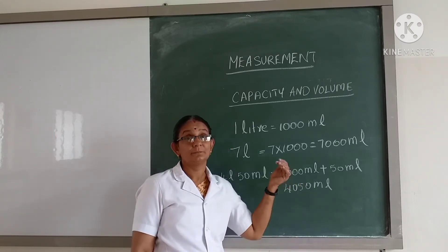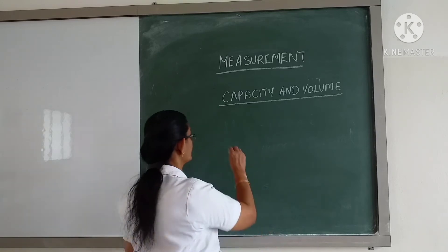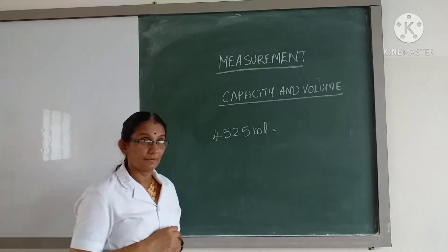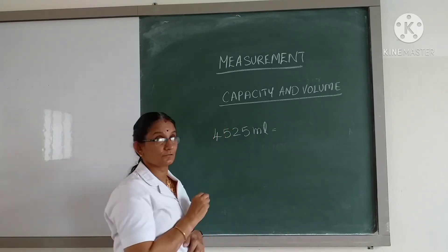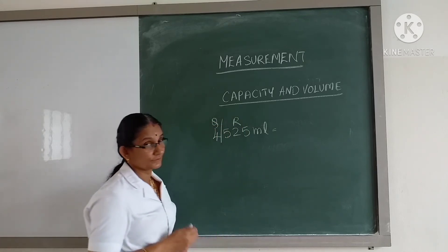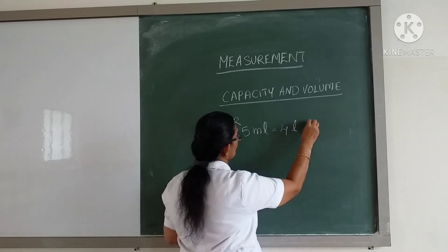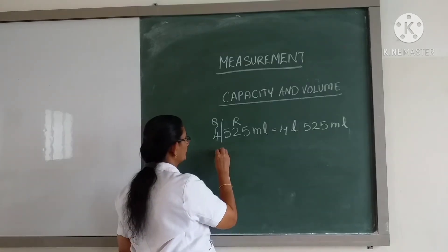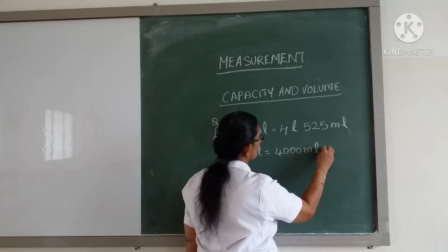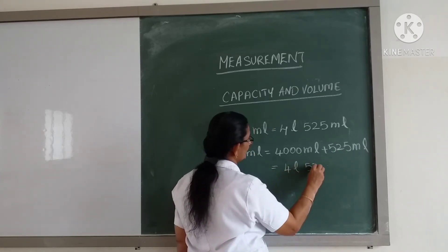Now let us see how to convert milliliters into liters. To convert, we divide by 1000. For 4525 milliliters, when we divide by 1000, the last three digits form the remainder in milliliters and the rest form the quotient in liters. We can also write 4525 milliliters as 4000 milliliters plus 525 milliliters, which equals 4 liters and 525 milliliters.